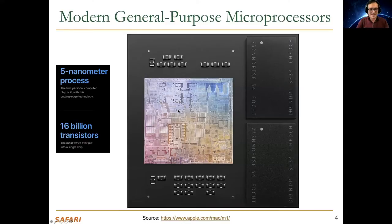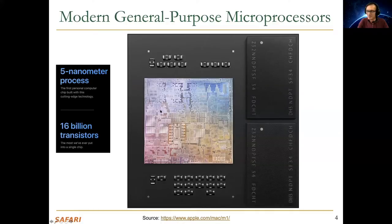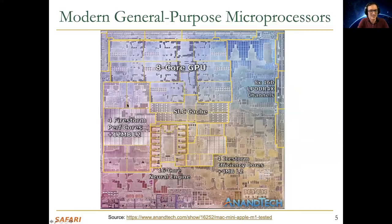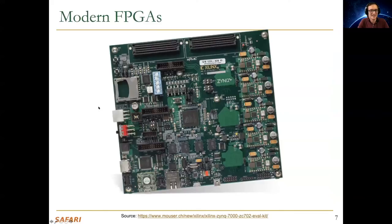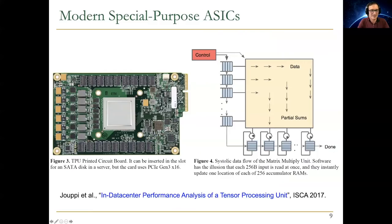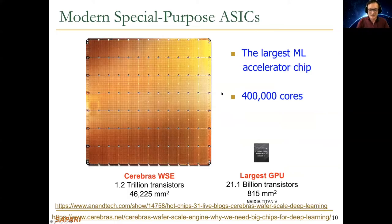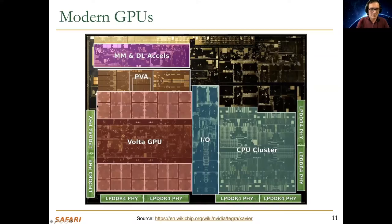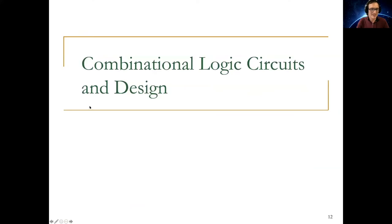We're looking at general purpose microprocessors, all of which are built by combinational as well as sequential components. Today we're going to finish the combinational components, so you're going to see a lot of the components that make up these processors. There are many different types of processors, but they all look the same and are actually built by similar basic components.